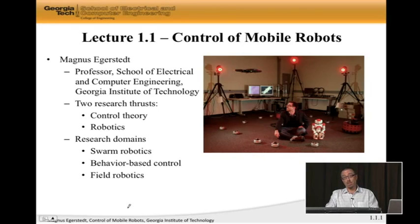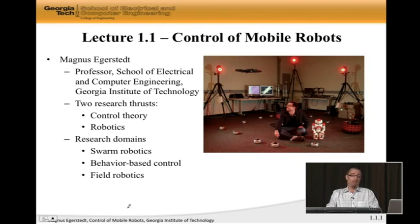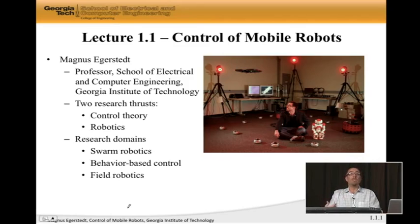Another area that I'm interested in is behavior-based control. The idea is that since most robotic tasks are rather complex, there is no single controller that can solve the problem. Instead, you have to break the controller structure down into multiple controllers. For instance, if you have a robot that is supposed to go to a goal, you have one controller that takes you towards the goal, but then unmodeled obstacles show up in the way. You have to switch to another behavior that ensures that you don't slam into obstacles. This idea of designing multiple controllers and switching between them becomes even more important when you have complicated dynamical systems like humanoid robots and snake robots, or things that are highly articulated instead of just robots on the ground.